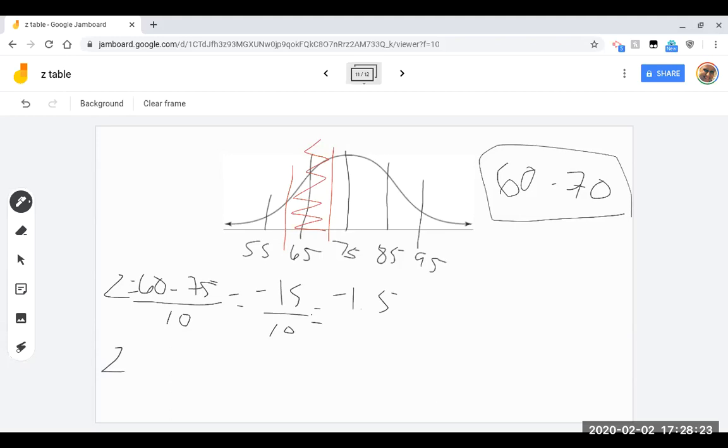Now we already know the z-score for 70 because we did it in the previous video, but just to remind you, 70 minus 75 divided by 10, and this is going to be negative 0.5.